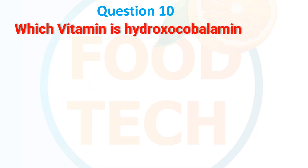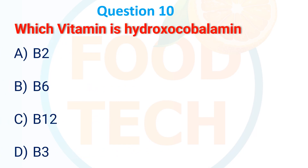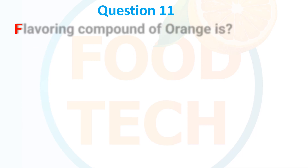Question 9: Monosodium glutamate is used in the food industry as — A. Flavor enhancer, B. Color enhancer, C. Texture enhancer, D. Appearance enhancer. The answer is A. Flavor enhancer.